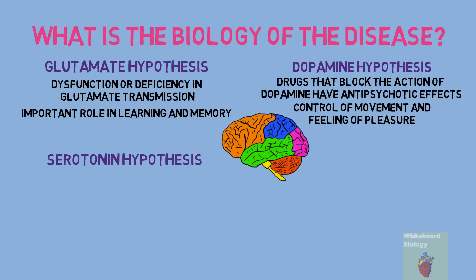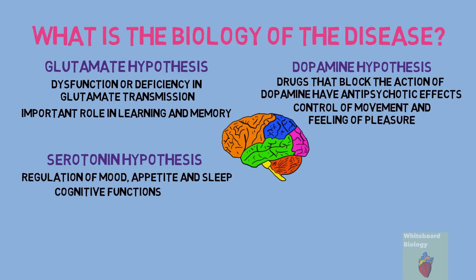The third theory is the serotonin hypothesis. Serotonin has many roles in the brain such as the regulation of mood, appetite and sleep, as well as cognitive functions such as memory and learning. Like dopamine, some of the most potent antipsychotic drugs block the action of serotonin, suggesting that an increase in serotonin activity may be causing schizophrenia.